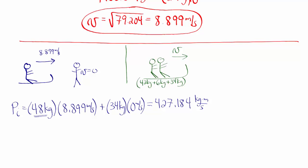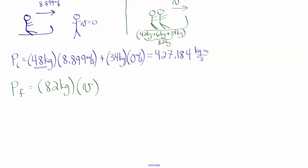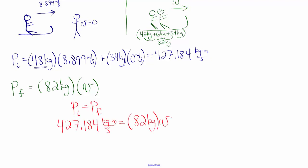The final momentum is the total mass of 82 kilograms times v, since all three move together. The initial momentum is 427.184 kilogram meters per second. Setting 427.184 equal to 82v, we get a speed of 5.2096 meters per second. This is how fast Avery, her brother, and the sled are moving right after he has jumped on, but before they slide down the rest of the hill.